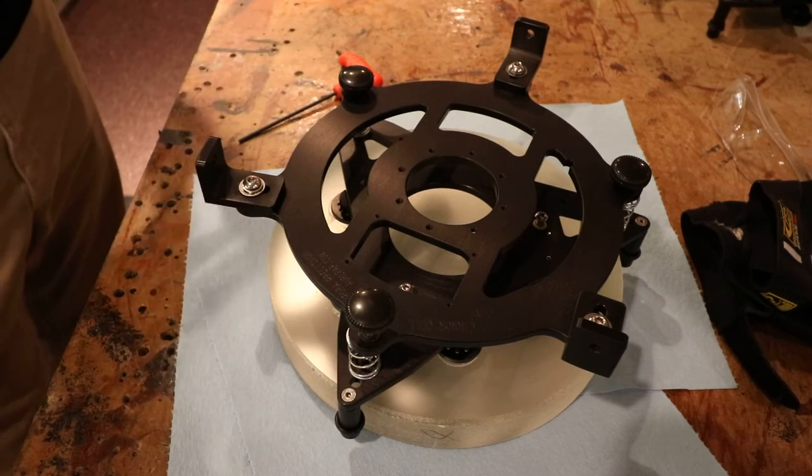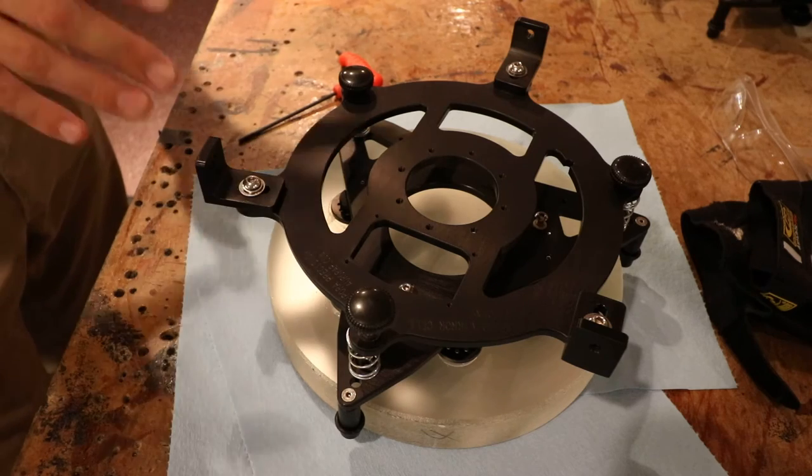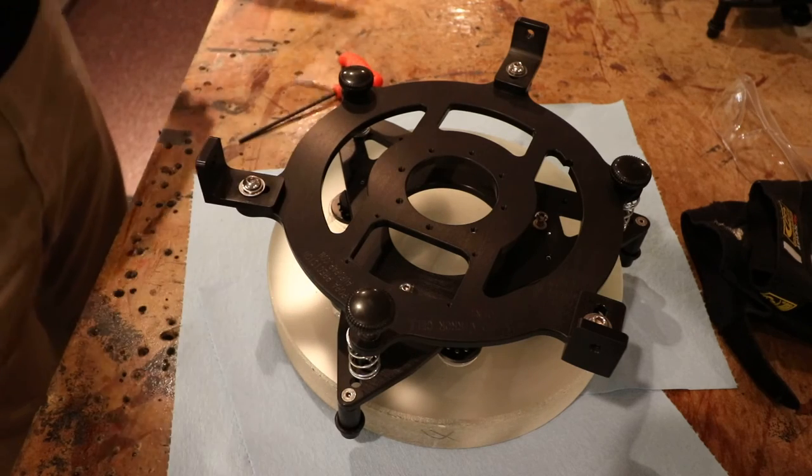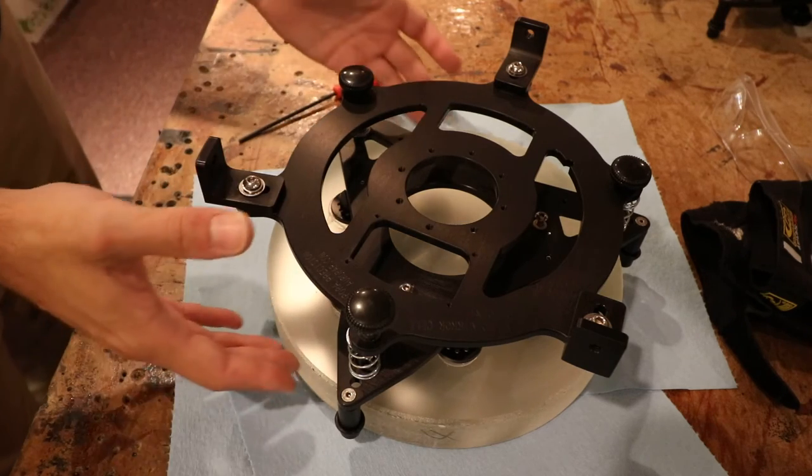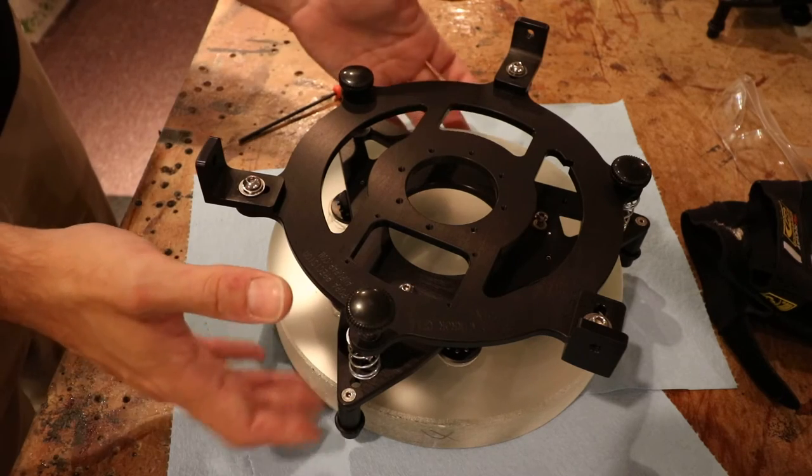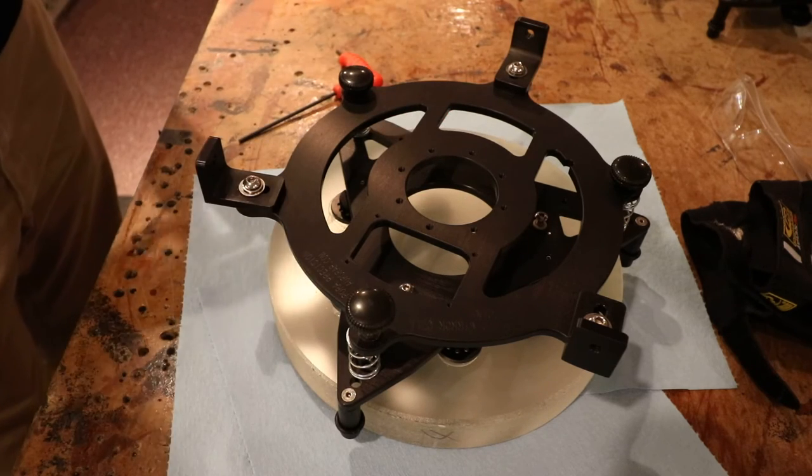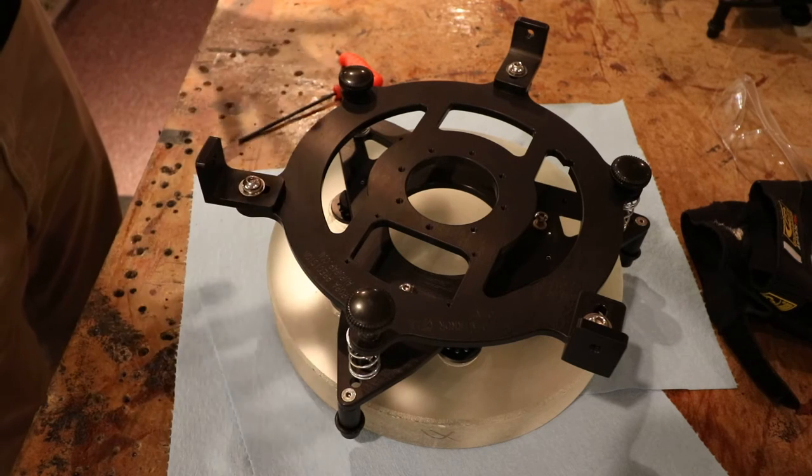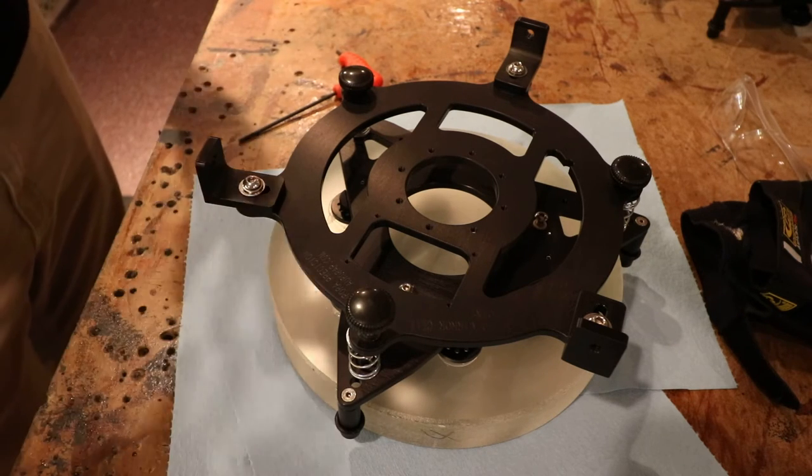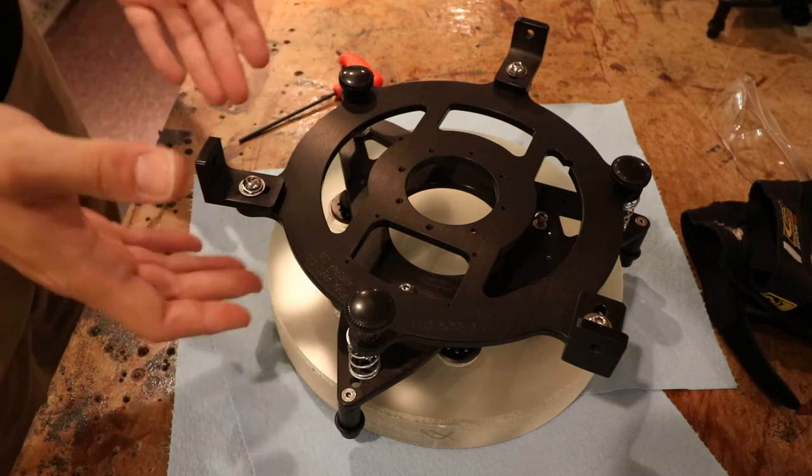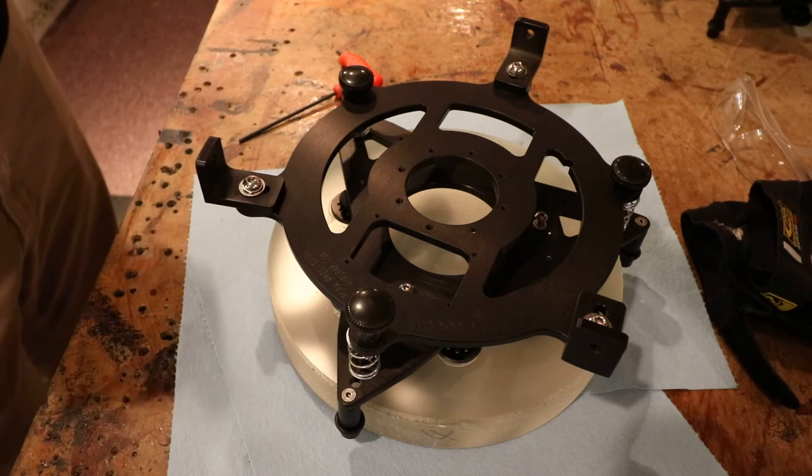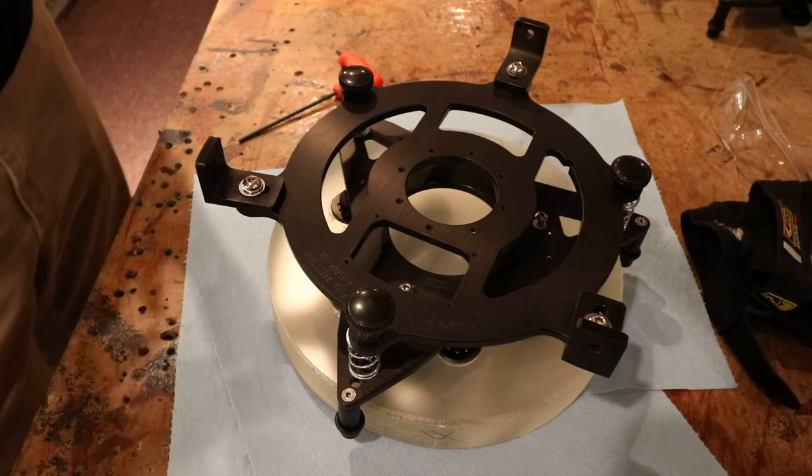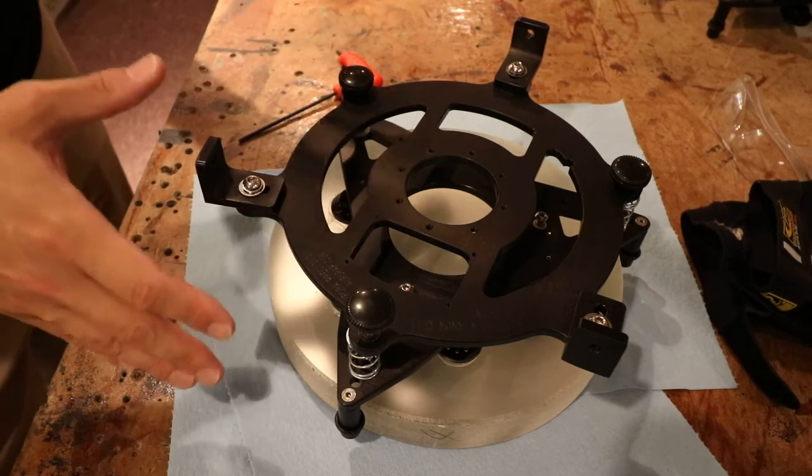So one of the frequently asked questions that we've had is, when it comes time in the future, it could be 5, 10, 15 years in the future, that that mirror coating needs to be redone. That the surface of the mirror, the aluminum coating, needs to be stripped and reapplied by a mirror coating company. What do you do with the mirror cell being attached to the mirror?